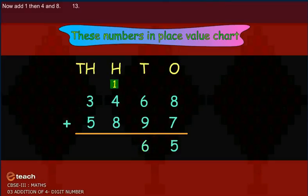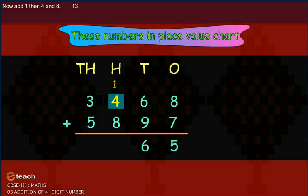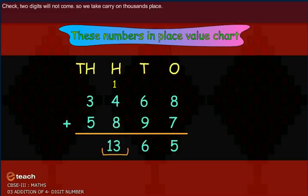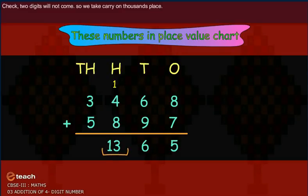Now add one, then four and eight. Thirteen. Two digits will not come, so we take carry on thousands place.